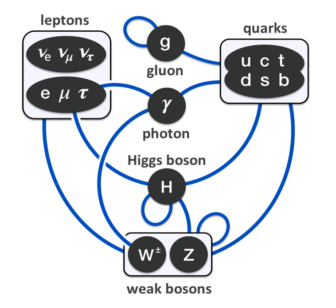The first step towards the standard model was Sheldon Glashow's discovery in 1961 of a way to combine the electromagnetic and weak interactions. In 1967, Steven Weinberg and Abdus Salam incorporated the Higgs mechanism into Glashow's electroweak interactions, giving it its modern form.